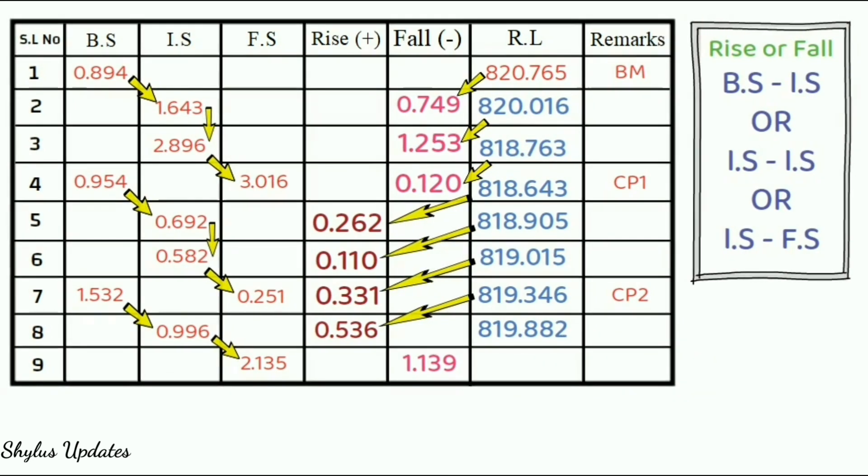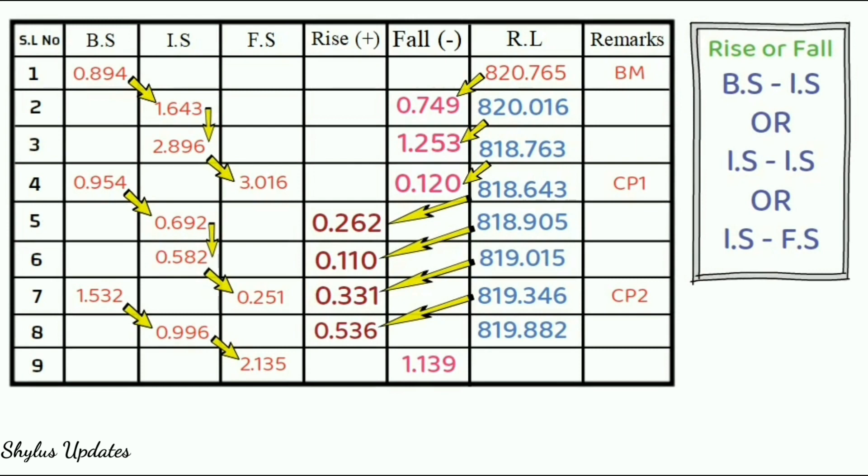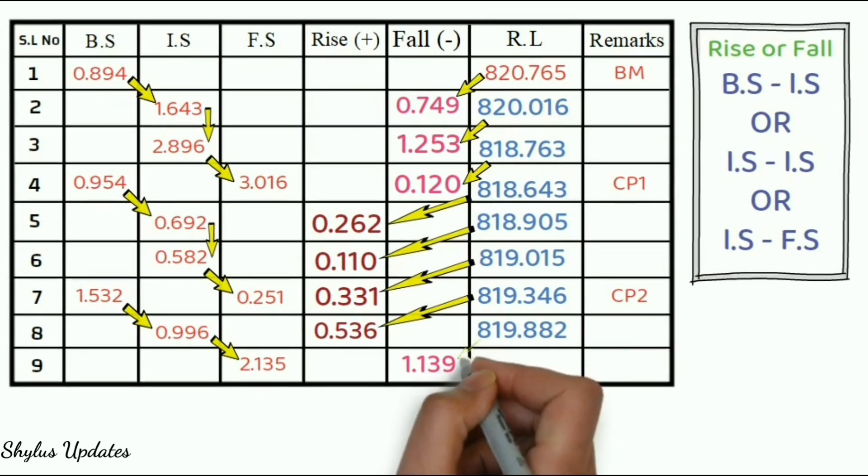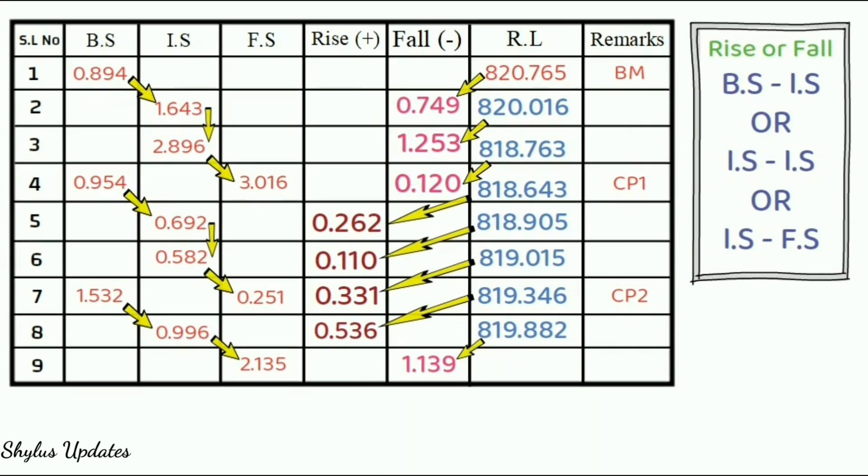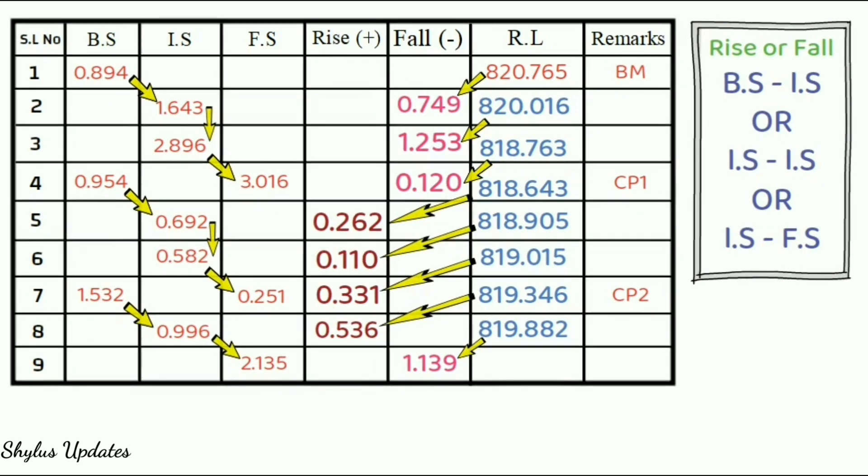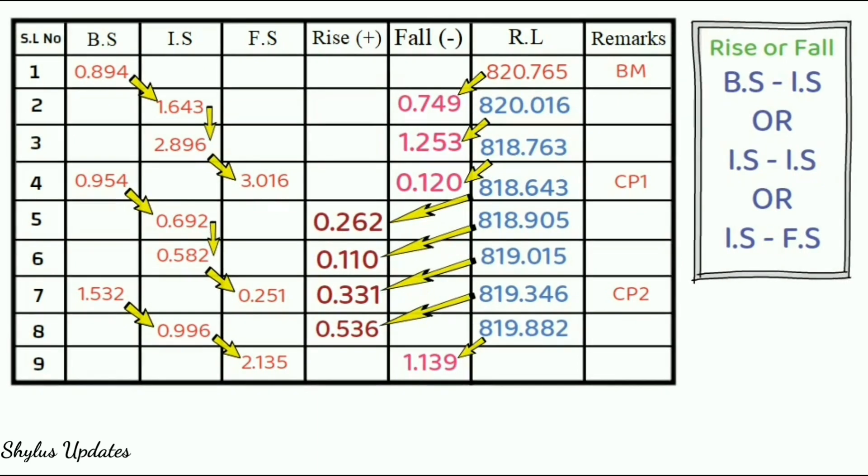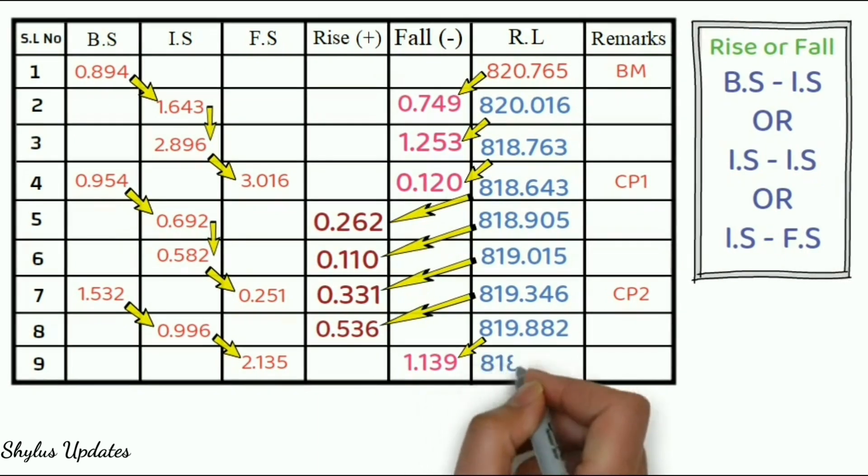Next, value is on fall. So, you have to subtract. That is, 819.882 minus 1.139, which gives 818.743. I have clearly shown using arrows for your understanding.